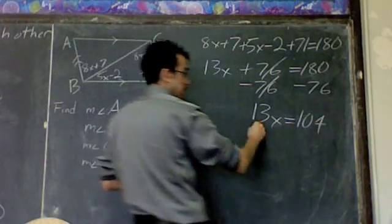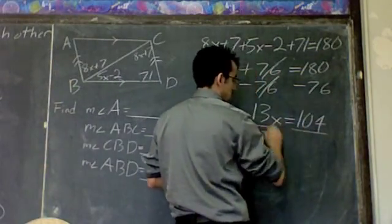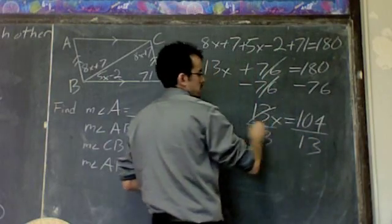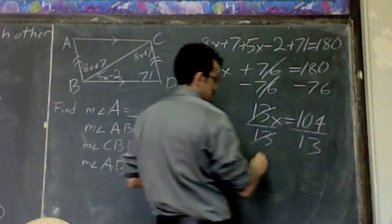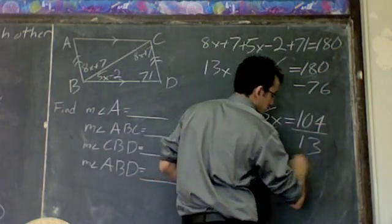Last step. Divide both sides by 13. And let's see, 104 divided by 13, that should be 8. We get x is equal to 8.